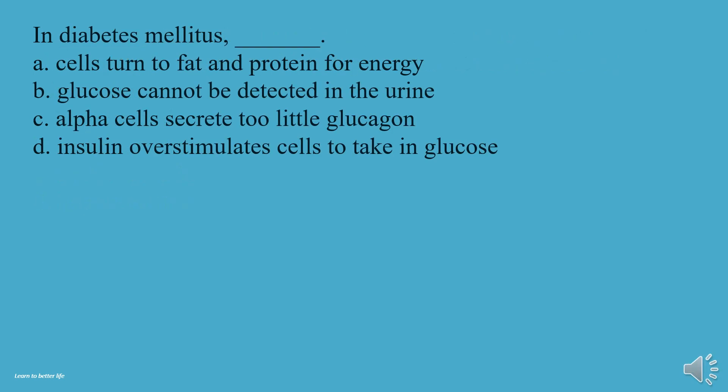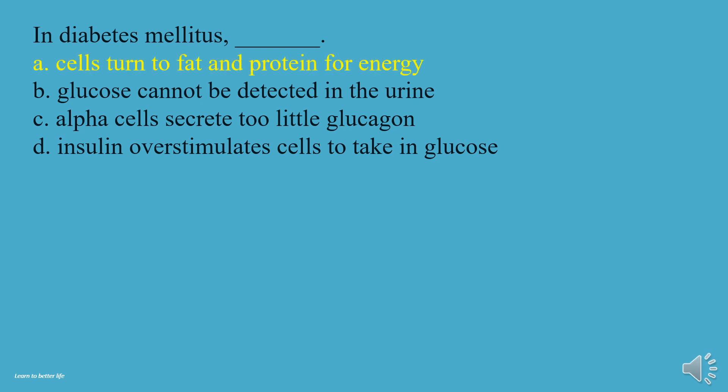In diabetes mellitus: A, Cells turn to fat and protein for energy. B, Glucose cannot be detected in the urine. C, Alpha cells secrete too little glucagon. D, Insulin overstimulates cells to take in glucose. The answer is A, Cells turn to fat and protein for energy.